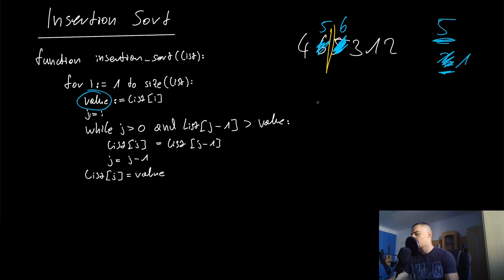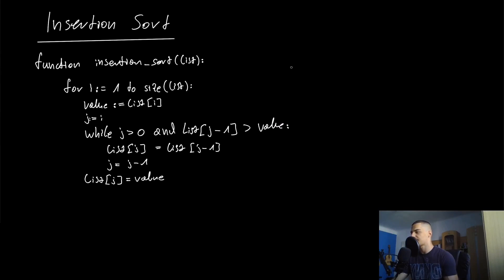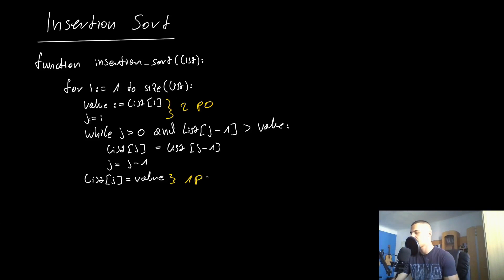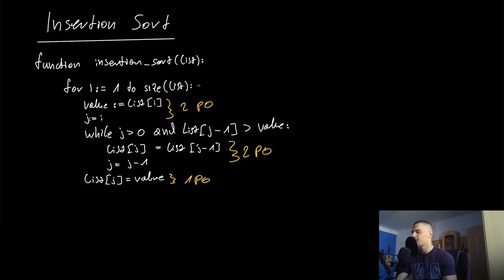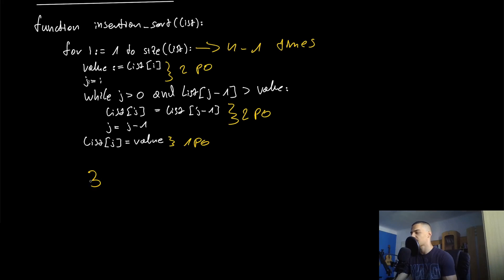This is how it works and we end up with the sorted list one, two, three, four, five. Now let's analyze the runtime complexity. We identify the primitive operations: there are two primitive operations in one place, one in another, and two more — these three groupings are directly inside the for loop. The for loop runs from one to n, which is n minus one times, so those operations run three times n minus one, which gives us 3(n-1) definitively.